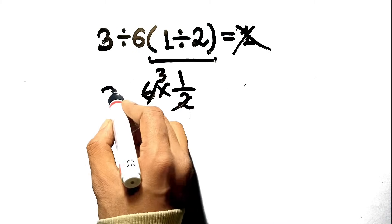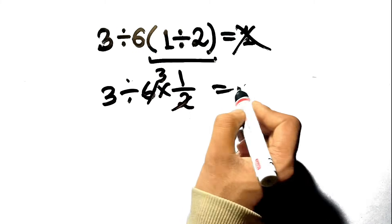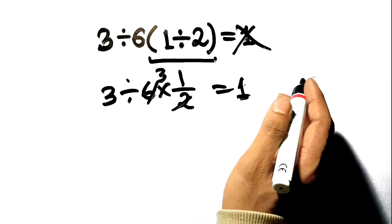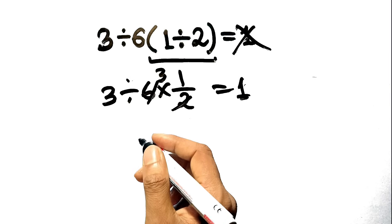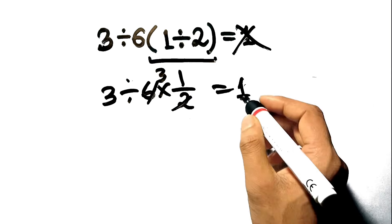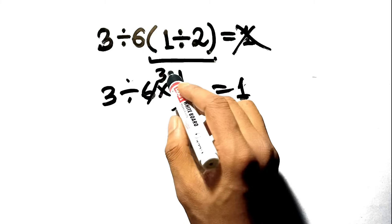Finally, they see 3 divided by 3, which equals 1. It's a clean, appealing answer, but it's based on a misunderstanding of how multiplication and division work together in the order of operations. You are prioritizing the hidden multiplication over the division that appears first.